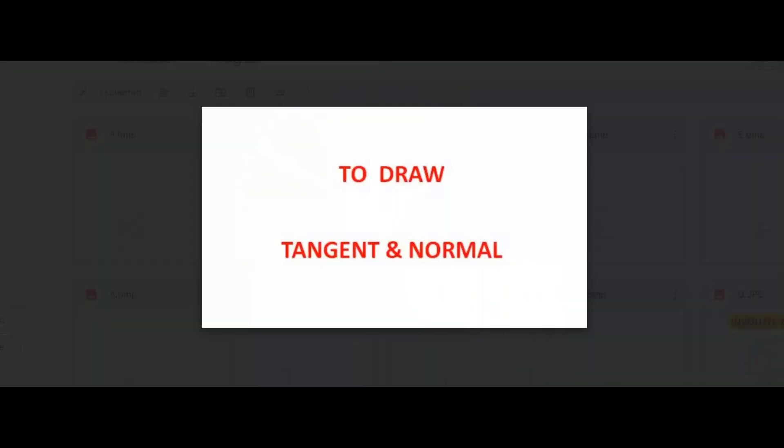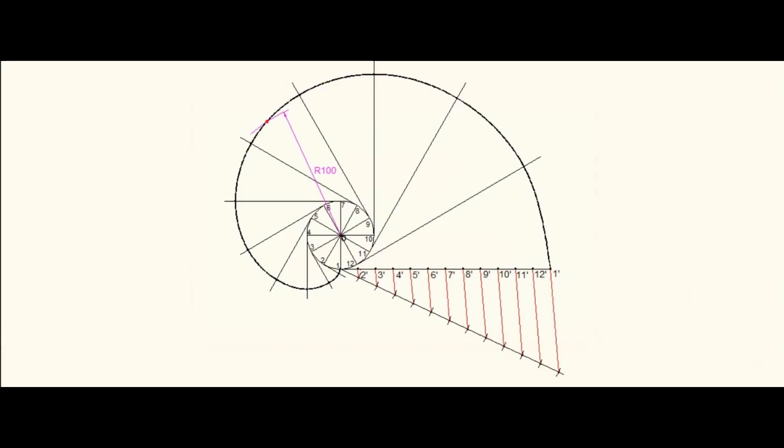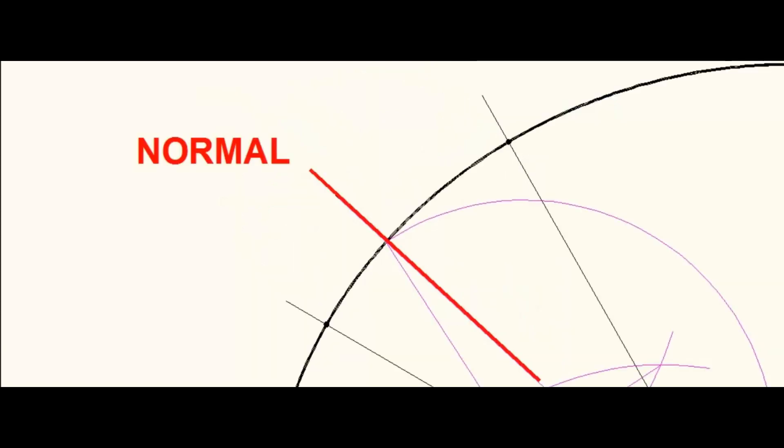To draw tangent and normal, mark the point on the curve through which tangent and normal is to be drawn. Join that point with the center of the circle. Draw a perpendicular bisector for this line. Draw a semicircle from the midpoint of the line. This semicircle intersects on the circle. Connect that point with the point on the involute. This is normal. A perpendicular line drawn to the normal through the same point is called tangent.